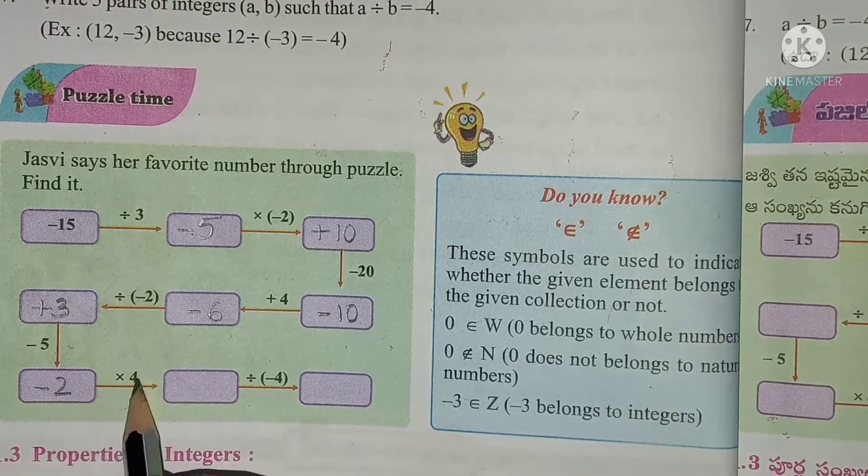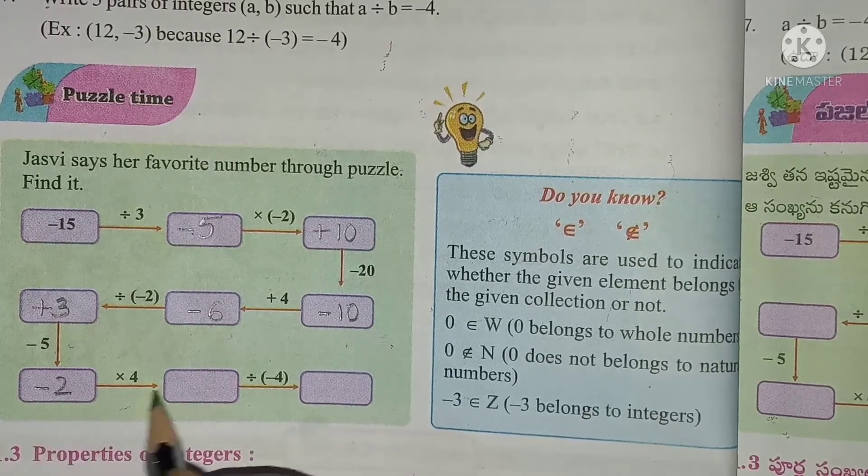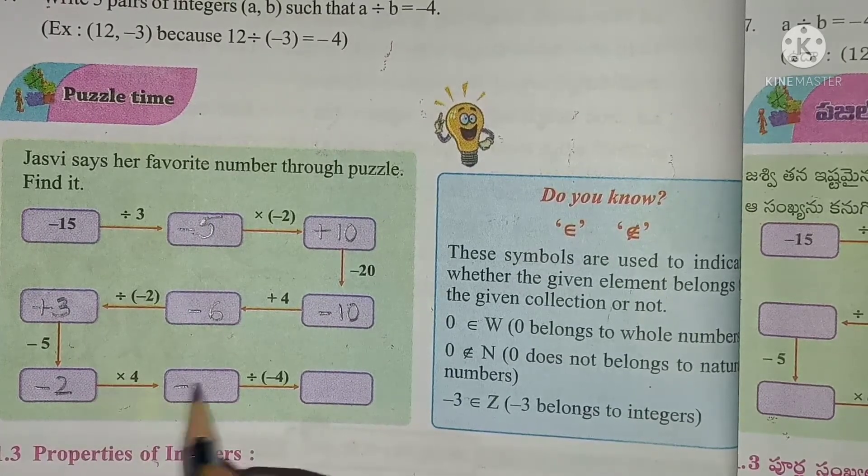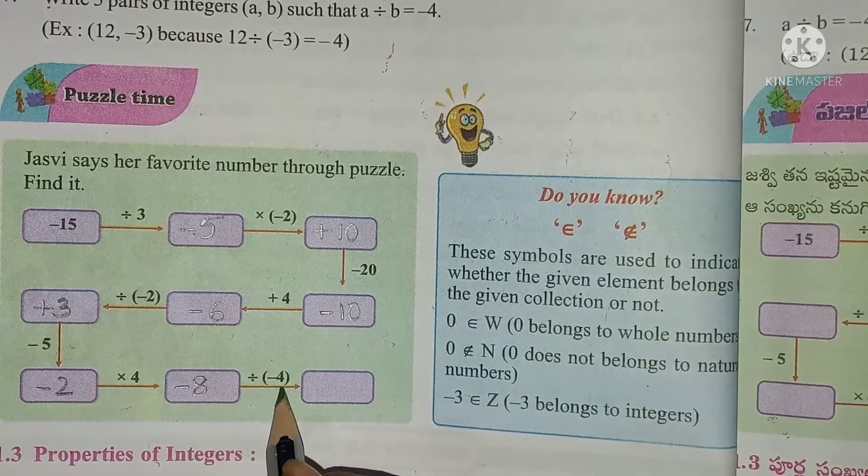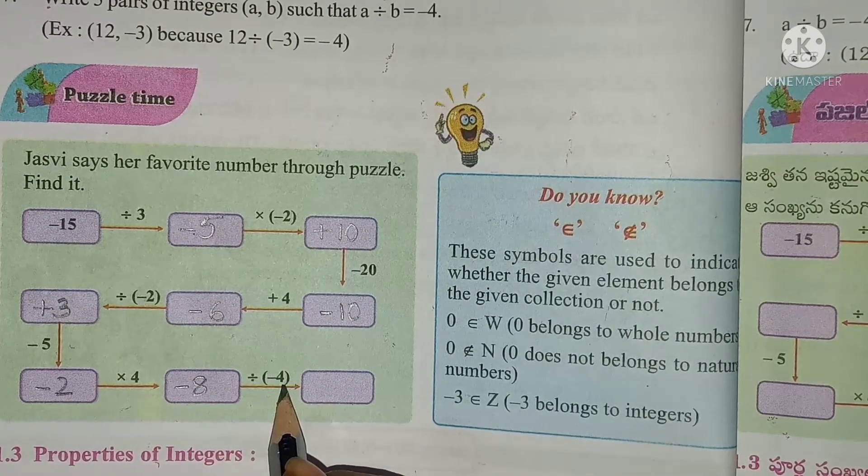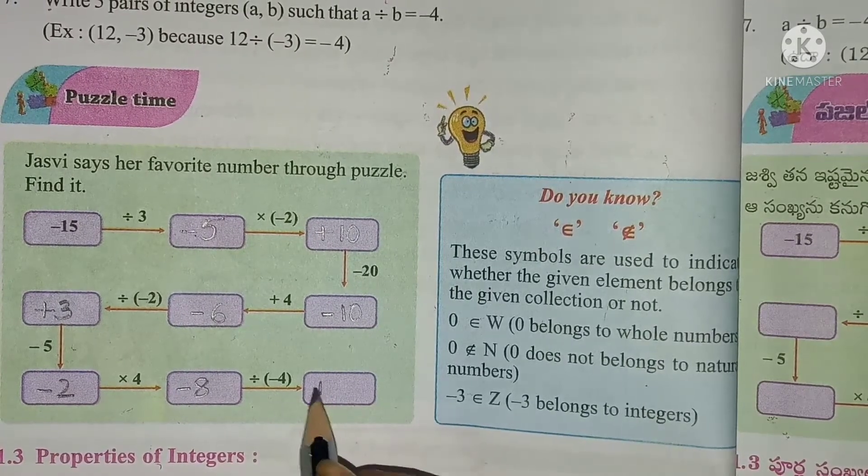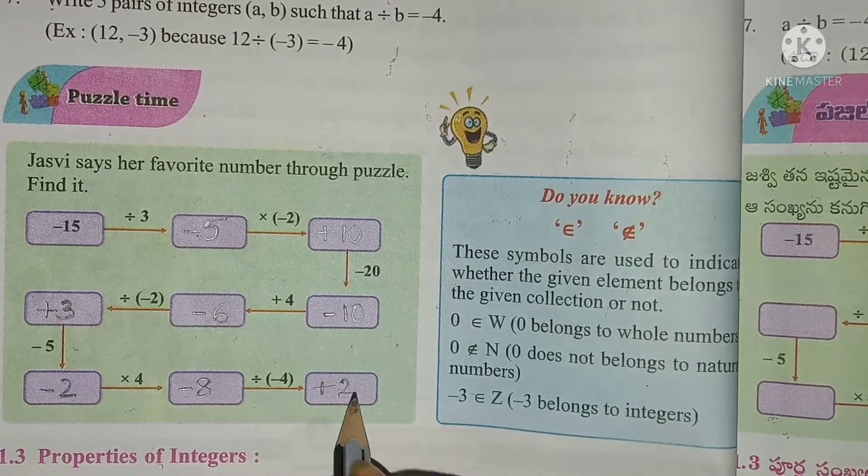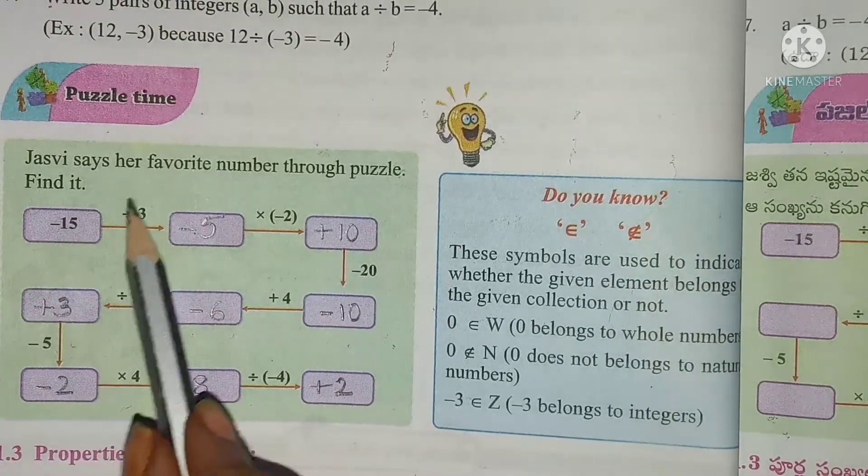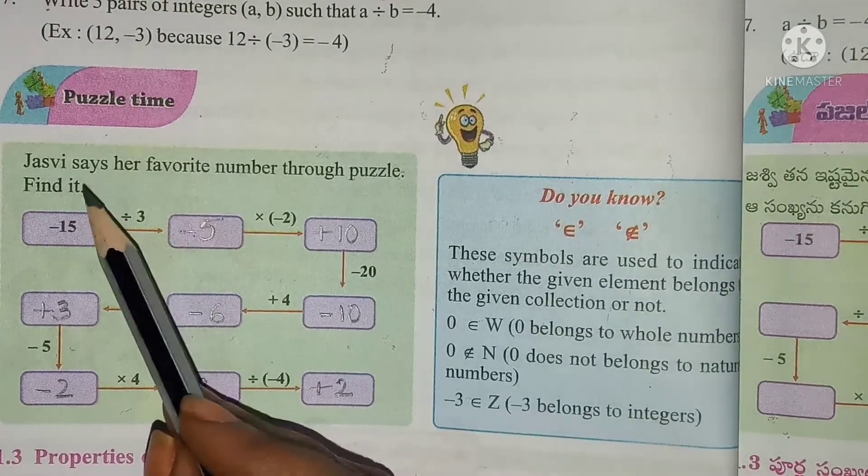Minus 6 divided by 4 equals minus 1.5... wait, minus 6 by 4. So Jasvi's favorite number is found through this puzzle. Hope you all understood this puzzle, children.